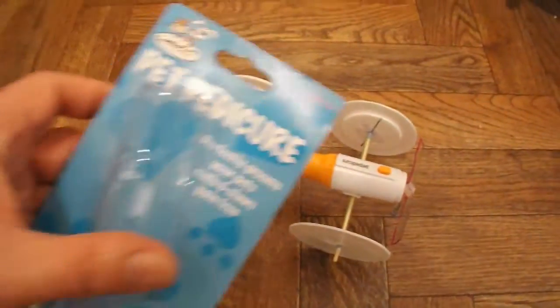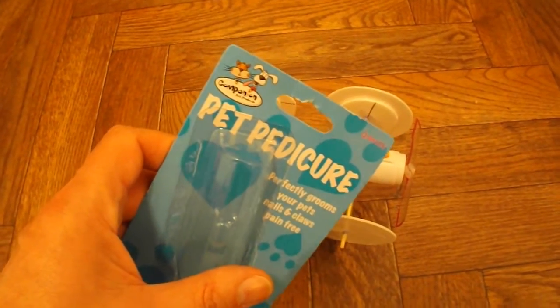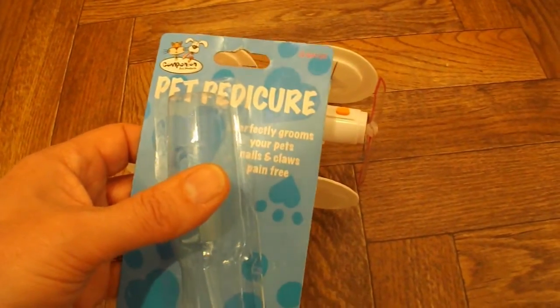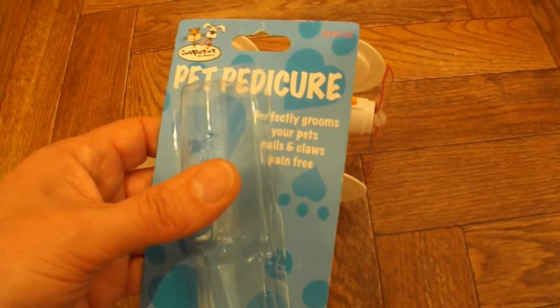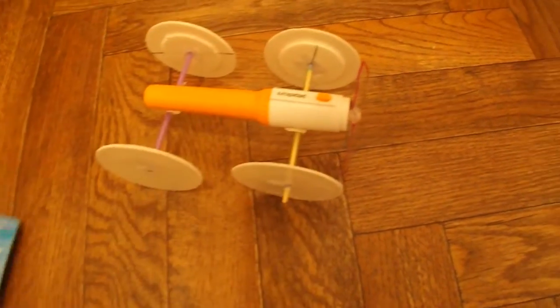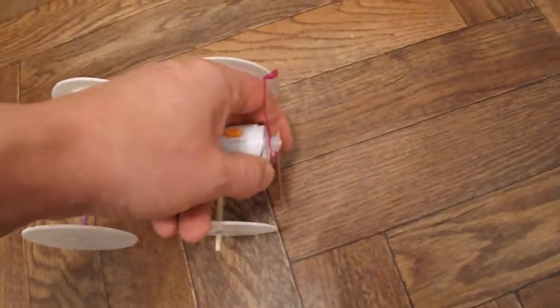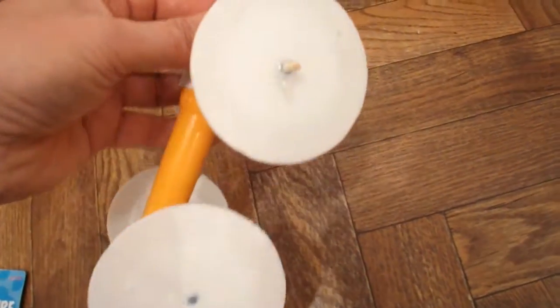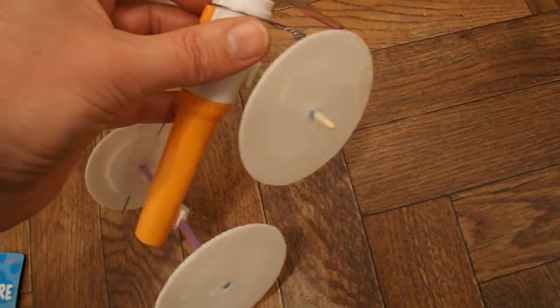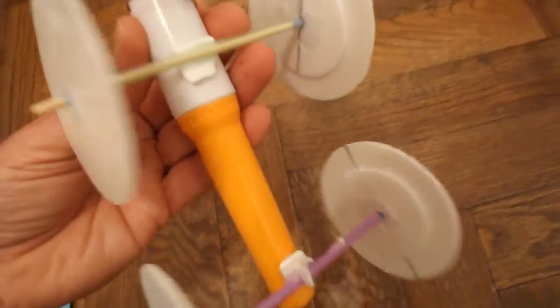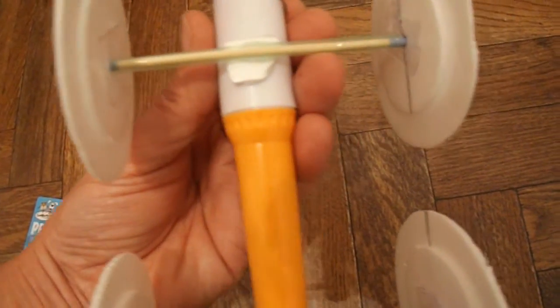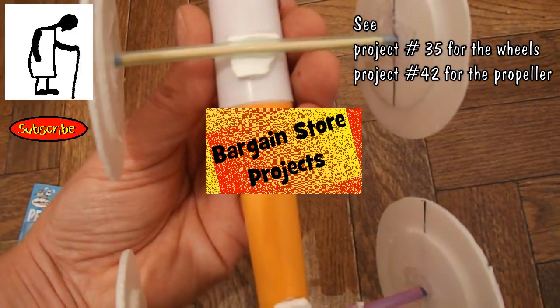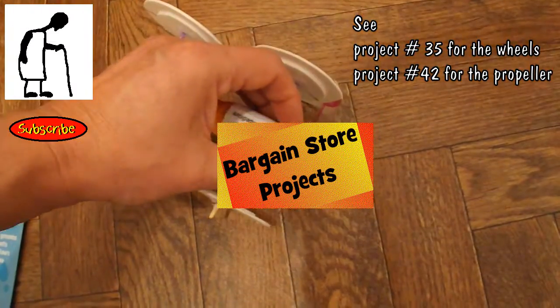This was a pet pedicure - a little abrasive wheel for trimming the nails and claws on your pets. Took the abrasive wheel off the end, made a little propeller out of a plastic pop bottle. The wheels are made out of polystyrene plates. The axles are barbecue skewers inside drinking straws. And that's it. And it works.